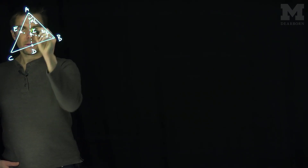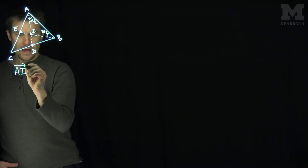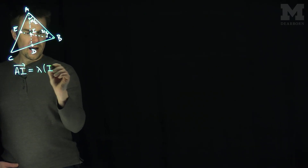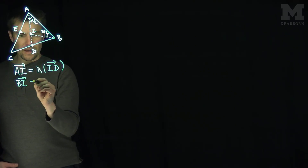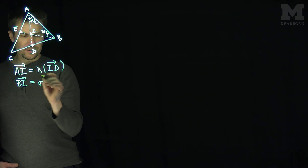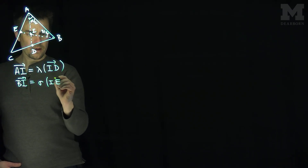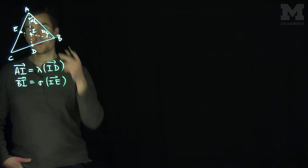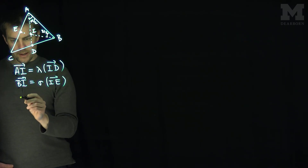I'd like to find a vector formulation of the in-center in terms of the vectors that represent the sides of the triangle. We know that if I go from A to I, that has to be a multiple of going from I to D. And if I go from B to I, that is another multiple, sigma, of going from I to E. We have a formula for the point of intersection that's the foot of the angle bisector from a previous video, so I can write this in the following way.